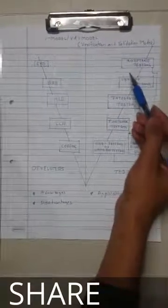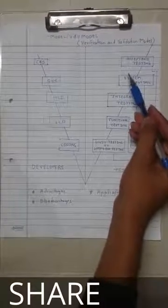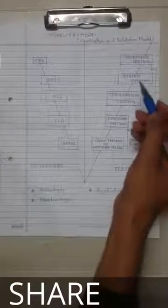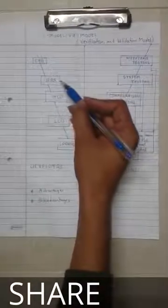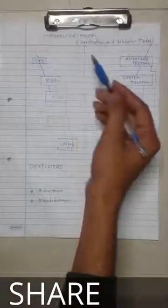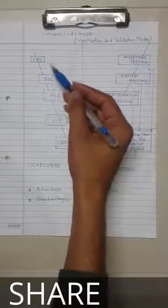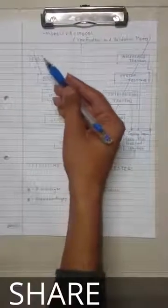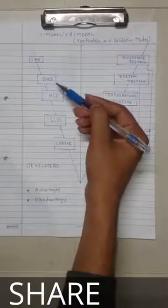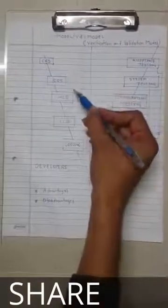The testing team reviews the CRS, identifies mistakes and defects, and sends them to the development team for correction. The developers continuously refine the CRS and convert it to the SRS.